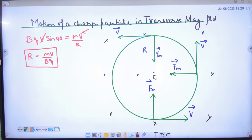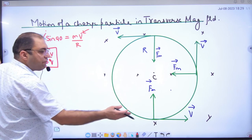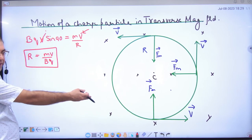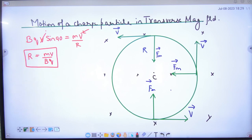Clear here. So this is the first result. Please note this result in the formula booklet. So this is a diagram. Radius formula. Note R is equal to MV by BQ. This formula will be very important.